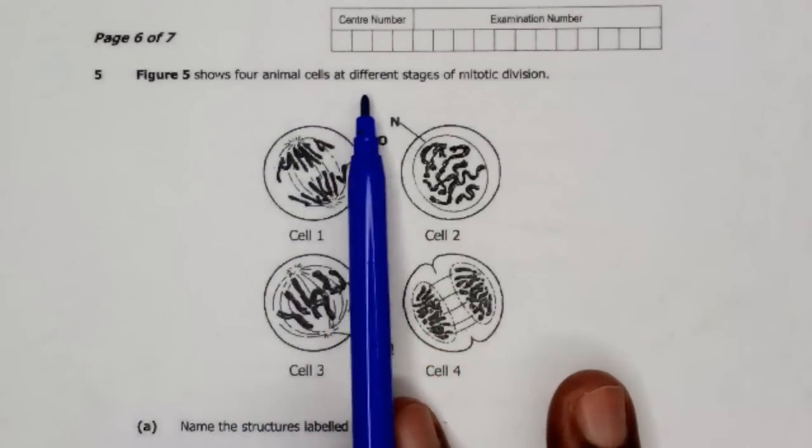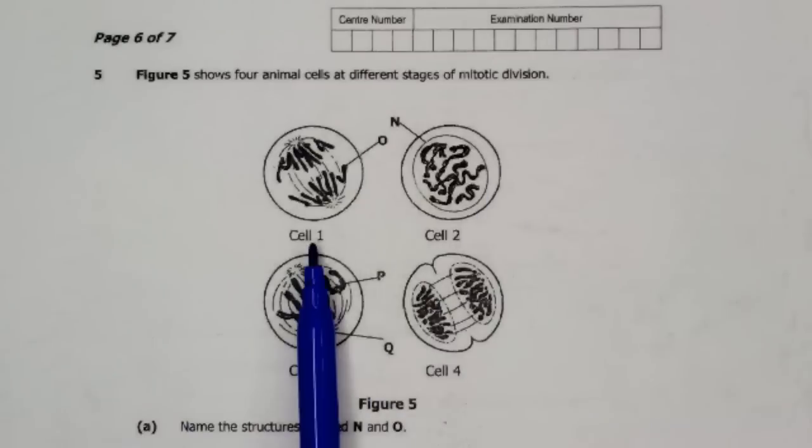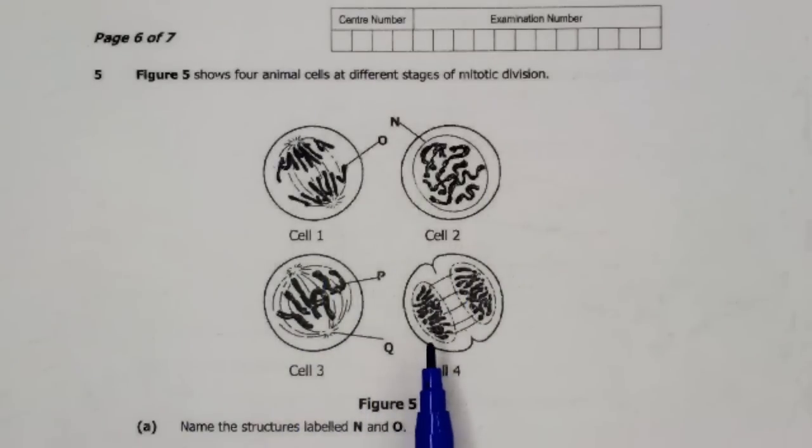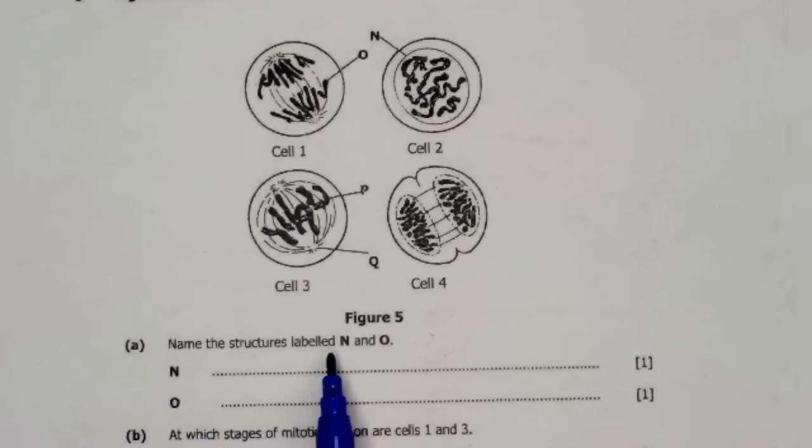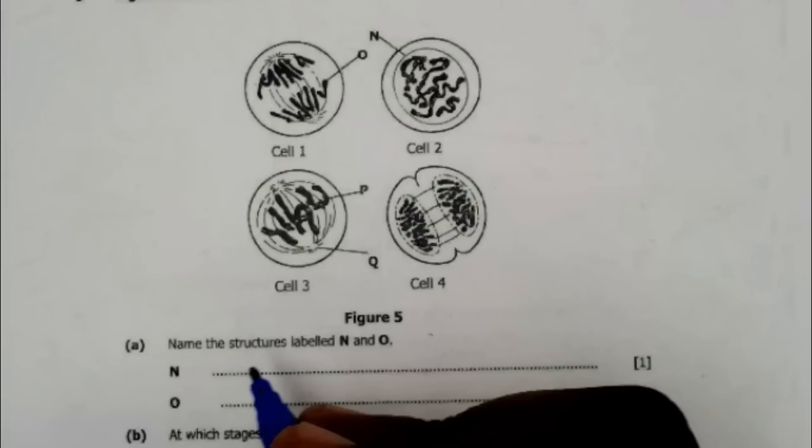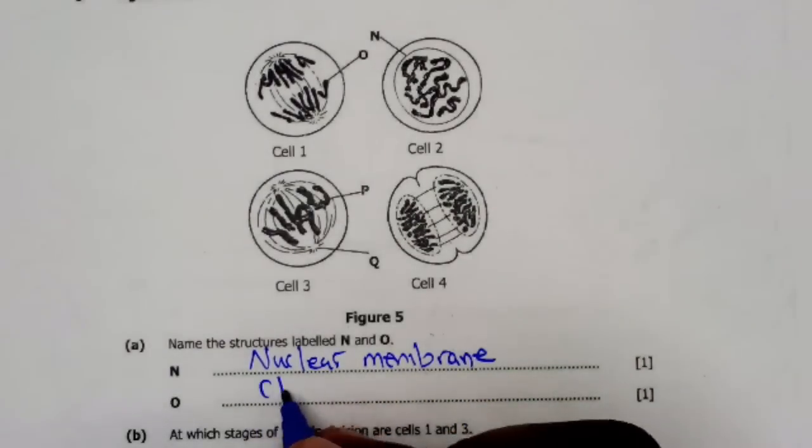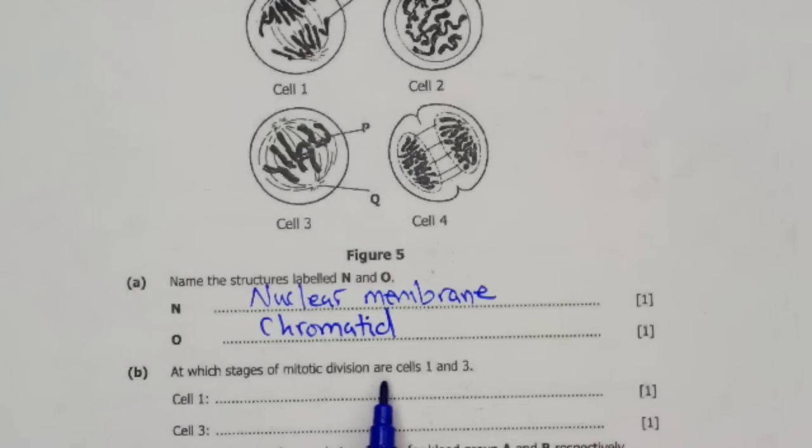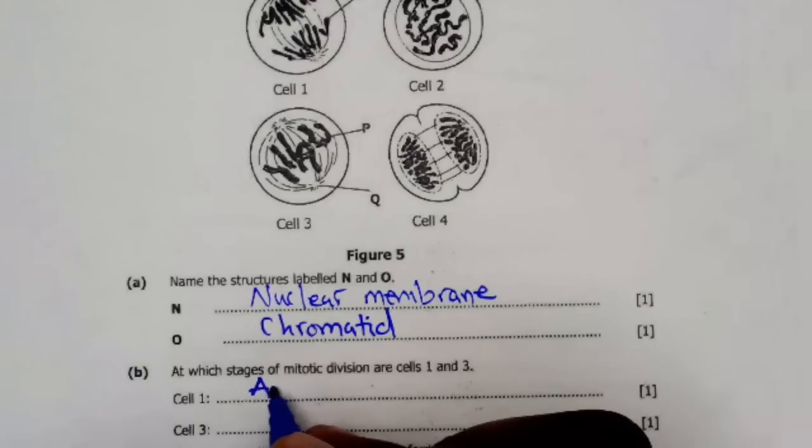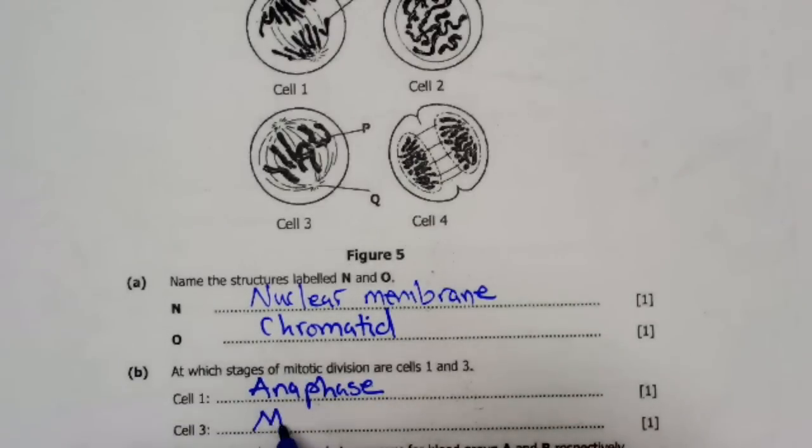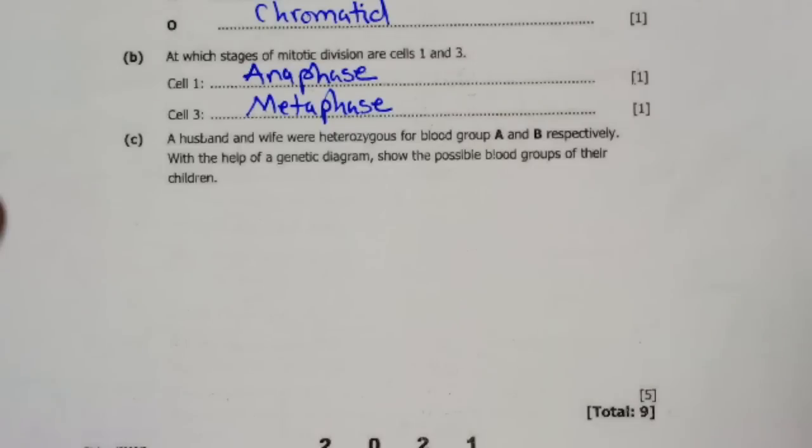Question number 5: Figure 5 shows four animal cells at different stages of mitotic division. We have cells 1, 2, 3, and 4 which are labeled N, O, P, and Q. 5A: Name the structures labeled N and O. Part N is the nuclear membrane and O is the chromatid. Part B: At which stages of mitotic division are cells 1 and 3? Cell 1 is at the anaphase and cell 3 is at the metaphase.